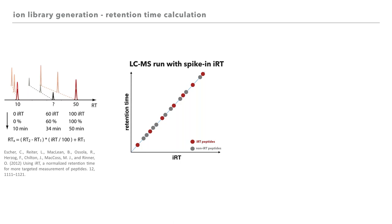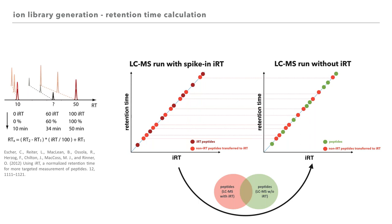Many measurements of the ion library were performed without iRT. To avoid re-measuring them, we used the idea behind iRT to align MS runs without spike-in iRT. We performed some runs with our exponential and stationary phase bacterial proteome mixture sample with spike-in iRT on our QExactive. We then transferred the retention time of the measured S. aureus peptides to the dimensionless iRT scale. We used these S. aureus peptides — which now had an iRT value — to find the intersection with peptides from LC-MS runs without iRT and calculated the iRT for non-intersecting peptides.